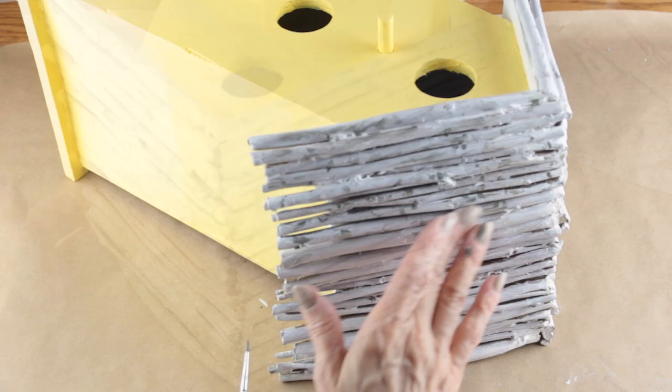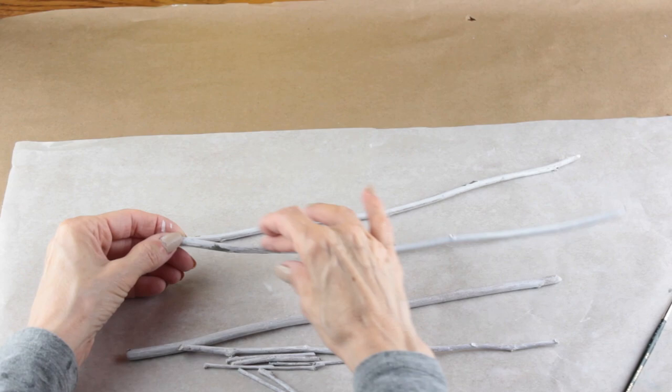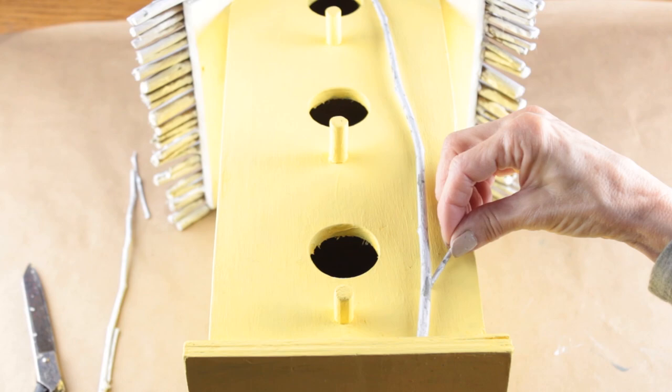After I completed the roof I used the same technique for the twigs on the front. I laid out my pattern of twigs on the front of the birdhouse and then attached them in place with my glue gun.